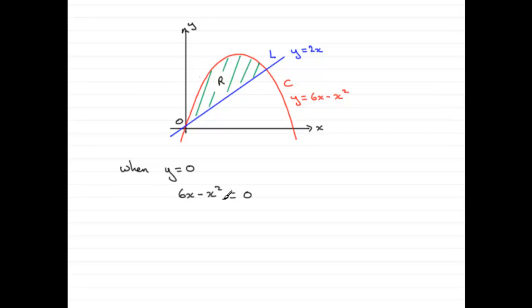So we have a quadratic equation here. We need to factorize this, so pull out a common factor x, and then you have 6 minus x equals 0.